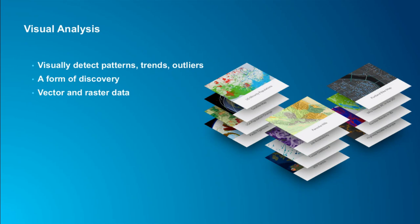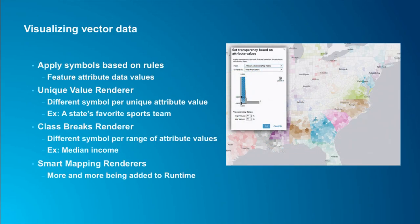Visual analysis can be done on raster or vector data. Vector data is commonly used in choropleth maps to show statistics like population by county, and raster renderers allow you to display hillshades for a DEM depending on the azimuth and altitude of the sun. For visualizing vector data, we're talking about applying symbols based on rules, usually applied to feature attribute data values. One of the most common renderers is a unique value renderer, which allows you to display different symbols per unique attribute value — for example, mapping a favorite sports team per state.